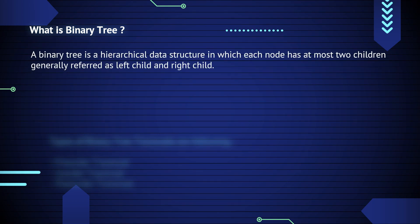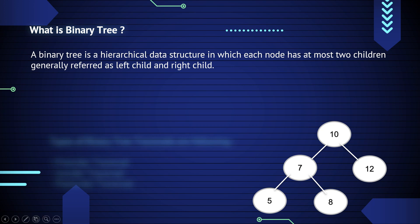First we will understand what is a binary tree. A binary tree is a hierarchical data structure in which each node has at most two children, generally referred to as left child and right child. Consider this binary tree: here 10 is a root node that has two children, 7 and 12. 7 is also an internal node, or you can say a parent node of 5 and 8.